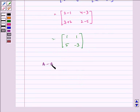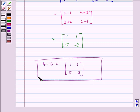Therefore, A minus B equals [1, 1; 5, -3], which is our required answer. I hope you understood the question. Bye and have a nice day.